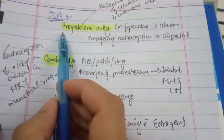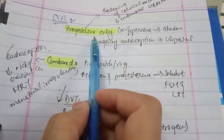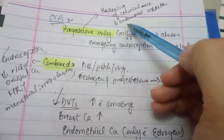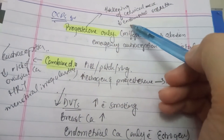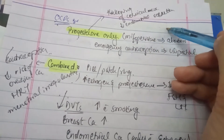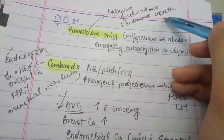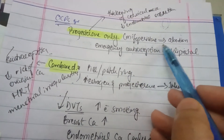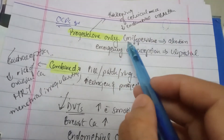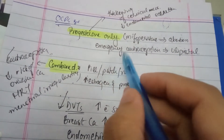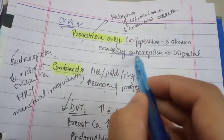OCPs — progesterone only: their mechanism of action is thickening of cervical mucus, which prevents sperm entry. It also makes the endometrium — the uterine lining — less suitable for implantation. Mifepristone is given for abortion, and ulipristal is used for emergency contraception, as it prevents ovulation.